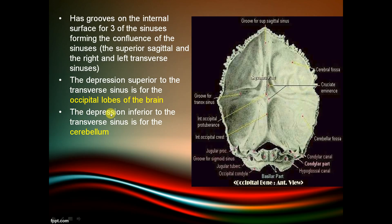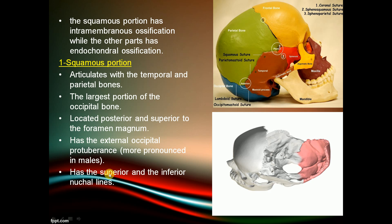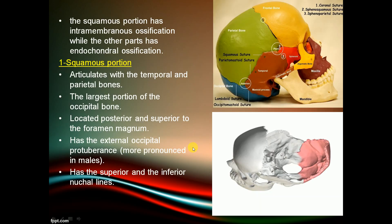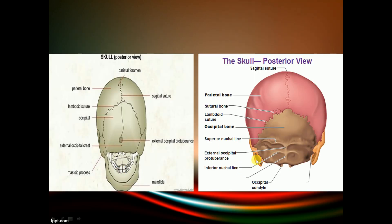The occipital bone has an external occipital protuberance, which is more pronounced in males. It also has superior and inferior nuchal lines.